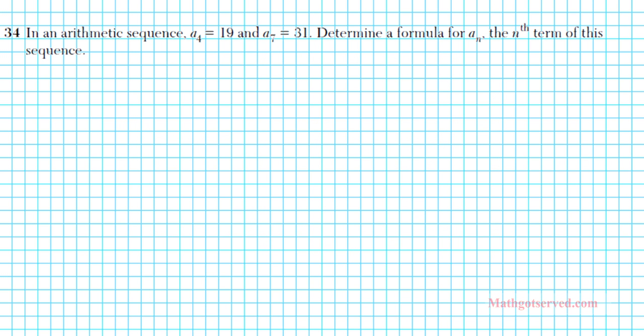Let's take a look at problem 34. It says, in an arithmetic sequence, a4 is 19 and a7 is 31. Determine a formula for an, the nth term of the sequence. When we are dealing with an arithmetic sequence, the formula we can use is an equals a1 plus n minus 1 times the common difference d. This is the only formula we can work with.